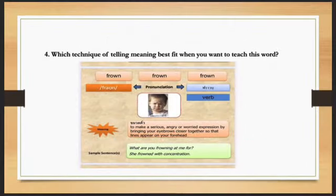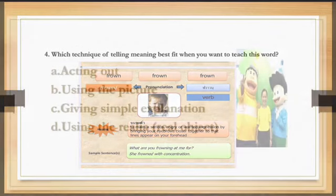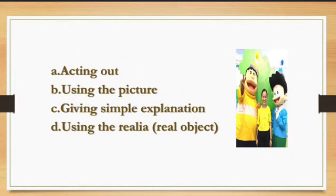Number 4. Which technique of telling meaning best fits when you want to teach the word 'frown,' meaning to bring your eyebrows closer together? Options: A. Acting out. B. Acting out. C. Using the picture. D. Using the picture. E. Giving simple explanation.